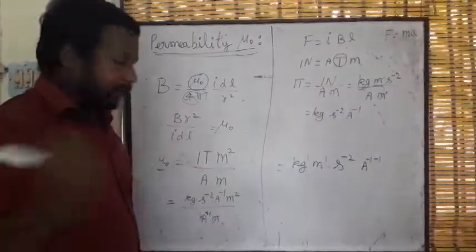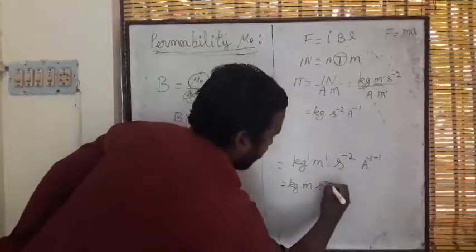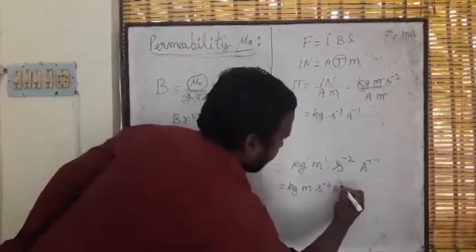Ampere minus 1 minus 1, I will get as ampere minus 2. KG meter second minus 2 ampere squared minus 2.